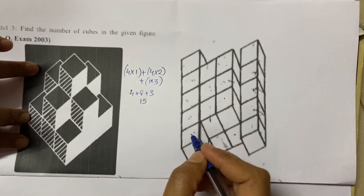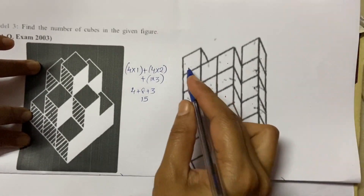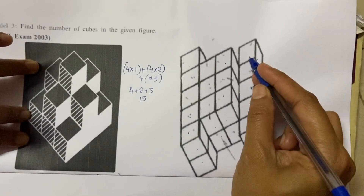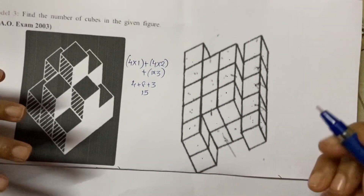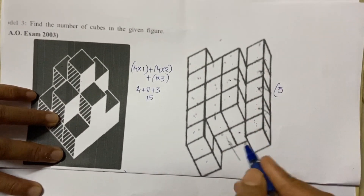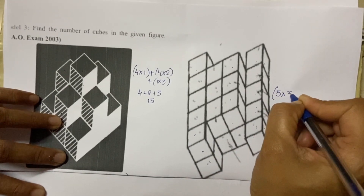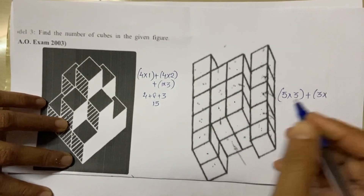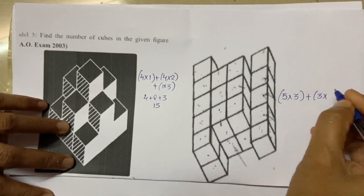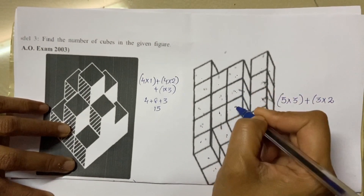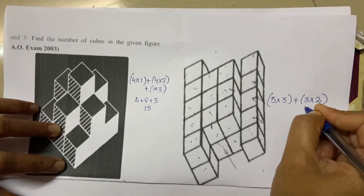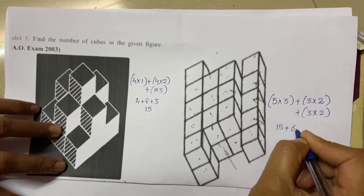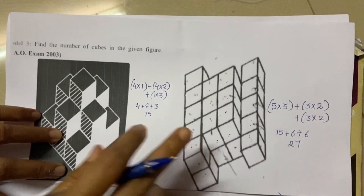Let's look at this figure. Here the columns: 1, 2, 3, 4, 5 — so 5 columns with 3 cubes. And here 3 columns with 2 cubes. Then here 3 more columns with 2 cubes. So 5 into 3 is 15, plus 3 into 2 is 6, plus 3 into 2 is 6. Total 15 plus 6 plus 6 — 27 cubes in this figure.